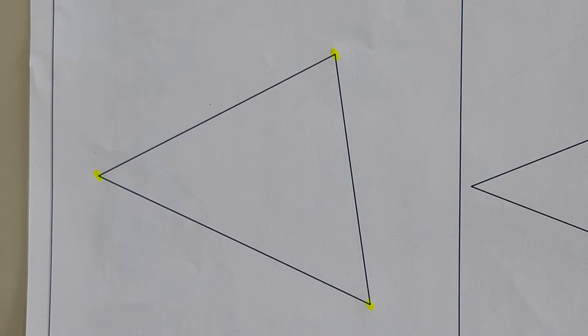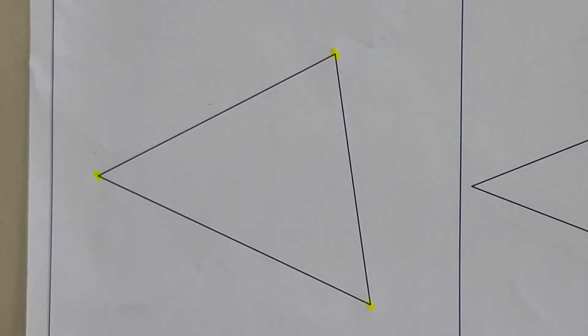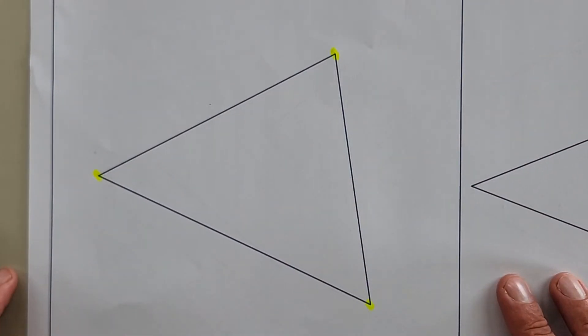Because what do I have here? I've got the triangle and I now need to draw a circle that goes through all of these corners. Up to now, I've given you the actual construction method that you're going to apply here.